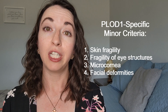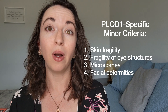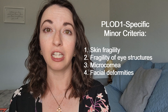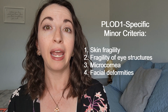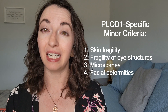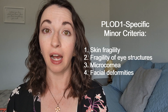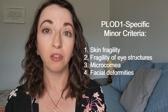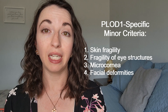The four gene-specific minor criteria of the PLOD1 variant include presence of skin fragility, such as easy bruising, thin skin, poor wound healing, and widened atrophic scarring, meaning wide scars that indent into the skin; fragility of the structures of the eyes; microcornea, meaning the clear tissue that covers the eyes is extremely thin; and facial deformities.